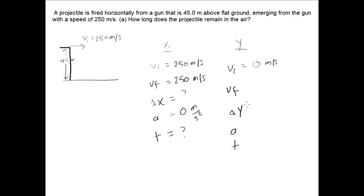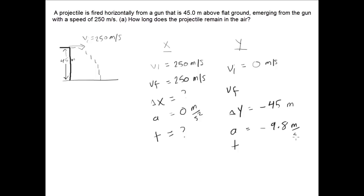Let's see what we know in the y direction. One of the keys here is that if a projectile is fired horizontally, the initial y speed will be zero — that is absolutely critical to understand. The projectile, as it falls, has a vertical displacement of 45 meters, but I recommend you call that negative 45 meters because the particle has traveled in a downward direction. Particles accelerating due to gravity have an acceleration of negative 9.8 meters per second squared. We don't know the time or the final speed in the y direction, but we're going to use the y-direction information to calculate the time of flight.